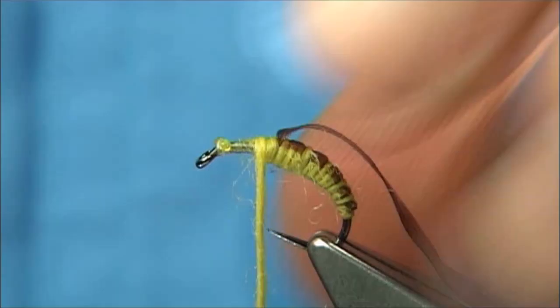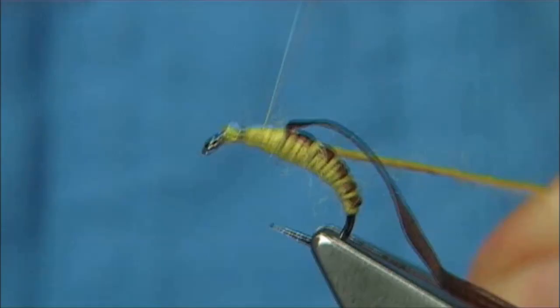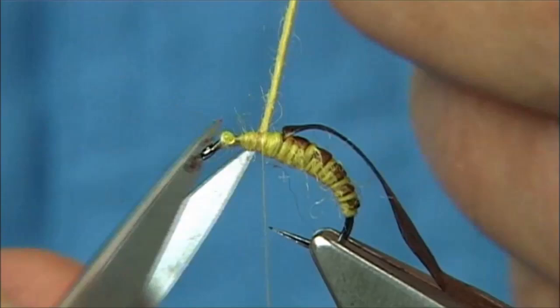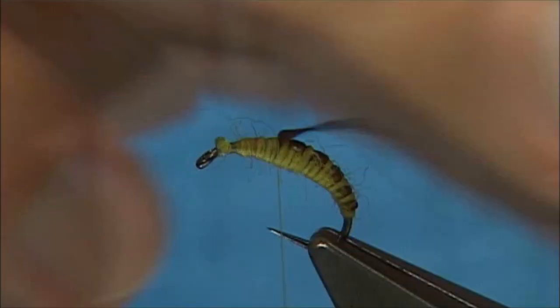And then just basically tie in your thread again. Tie over the top of the yarn. Trim away the waste piece of the thread and your yarn as well. Just take it up to your scud back, up to this point there. Now this is where you've stopped, in line with the point of the hook. So your thread, everything else is at that point.